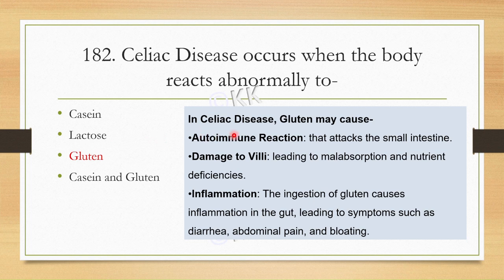Gluten may cause an autoimmune reaction that attacks the small intestine. It may also damage villi — the tiny finger-like structures of the intestinal lining — leading to malabsorption of nutrients. It may cause inflammation, diarrhea, abdominal pain, and bloating.